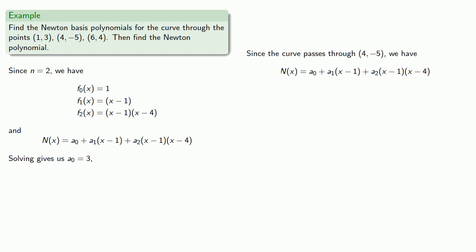Next, we know the curve passes through (4, -5). And so we know that if x is equal to 4, N(x) should equal negative 5. Now we already know a0. And again, because of the form of our Newton basis polynomial, the last factor disappears and our equation only has one unknown value. And so we solve and find our value for a1.